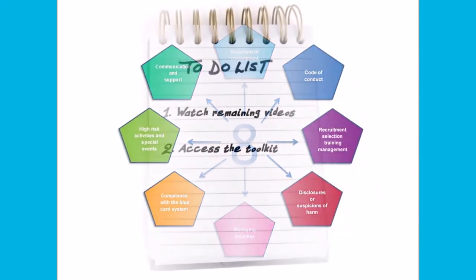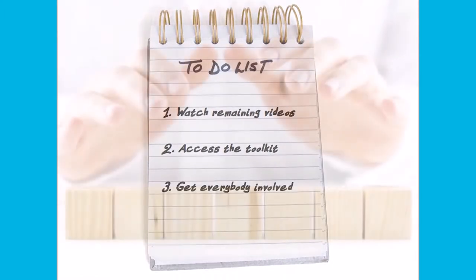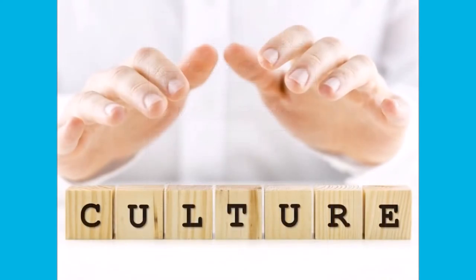When you get to the stage of drafting your risk management strategy, it is a good idea to ensure that all people involved with your organisation, especially children and young people, are consulted in the development and review of your strategy. This will assist to build an understanding of the importance of the strategy and build a culture which recognises and values the importance of upholding safeguards for children.